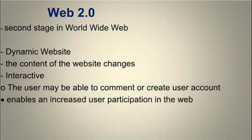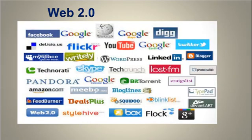Web 2.0 is the term used to describe the present generation of the worldwide web that concentrates on its capability of providing people the means to collaborate and share information online. It is a dynamic web page where users can interact — creating a user account, posting comments, uploading files and images, and others. Examples include blog sites, Facebook, Twitter, Instagram, and YouTube.